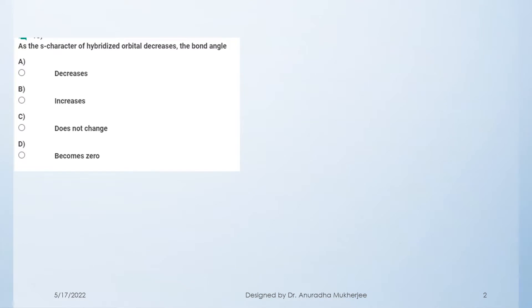This is the first practice problem. The problem is: as the S character of a hybridized orbital decreases, the bond angle — option A decreases, option B increases, option C does not change, and option D becomes zero.